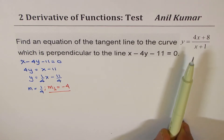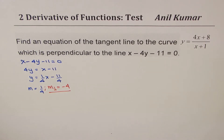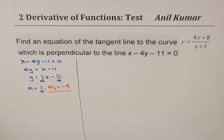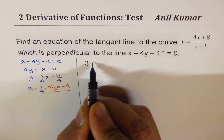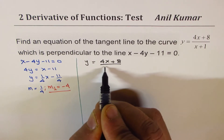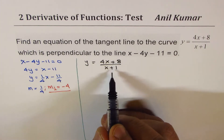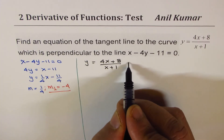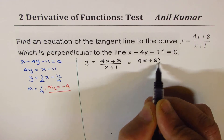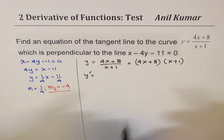Let us find an expression for the derivative of this curve. We are given the function y equals 4x plus 8 over x plus 1. Since some students have only done the product rule and not the quotient rule, I will rewrite this as a product of two factors: (4x plus 8) times (x plus 1) to the power of minus 1. We will find the derivative using the product rule.